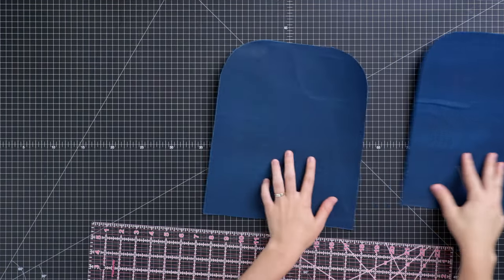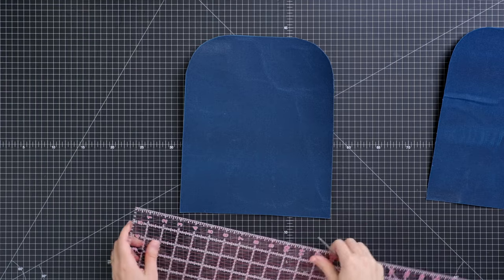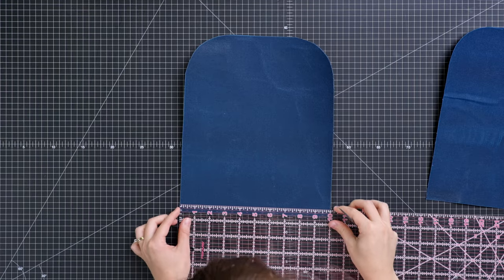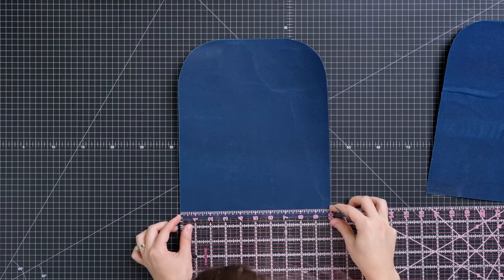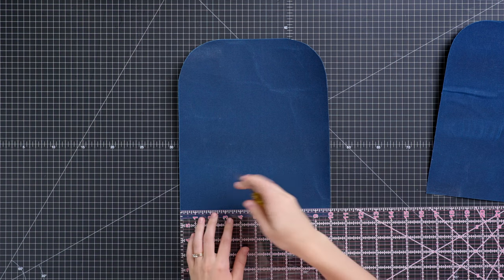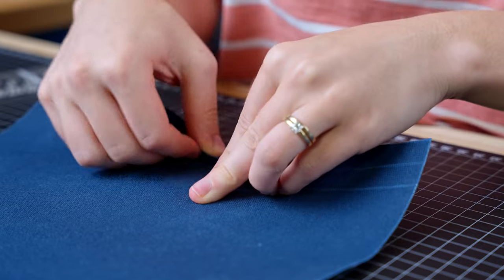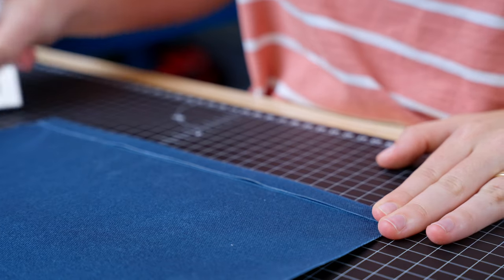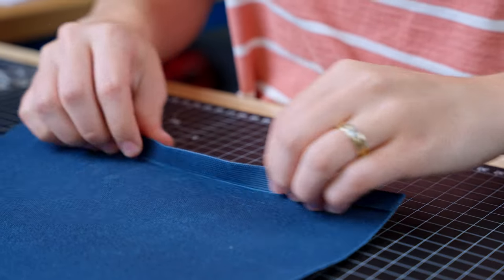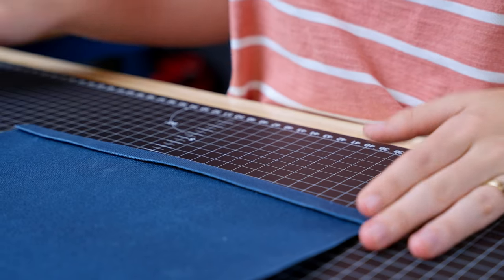The next step is to hem the bottom edges of our project. So for the side panels, we're going to make a half inch double hem on the bottom. And the great thing about Dura Wax is that it holds its shape. So when we score it with the scratch awl, we can just fold it over and it will hold. And then we'll just fold it over on the lines like so. We're going to do the same thing to the other side panel as well.